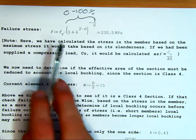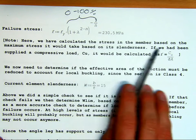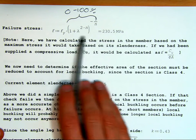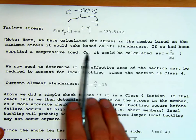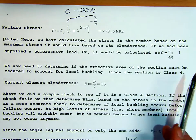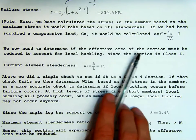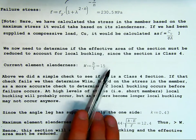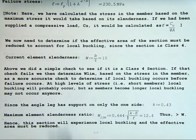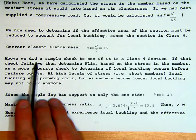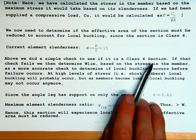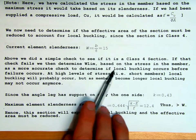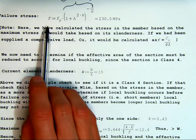We need the stress to calculate its updated value of the effective width. Here we've calculated the stress in the member based on the maximum stress it would take based on its slenderness. We now need to determine if the effective area of the section must be reduced to account for local buckling, since the section is class 4. So our current element slenderness is 15, and this exceeds what we're allowed to do for a class 4 section. Now, does it experience local buckling? If that check fails, then we determine a limiting value, a limiting slenderness, w_lim, based on the stress in the member. That's why we determined the stress above.